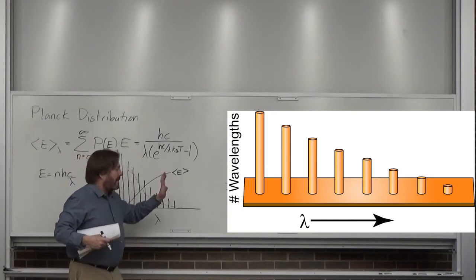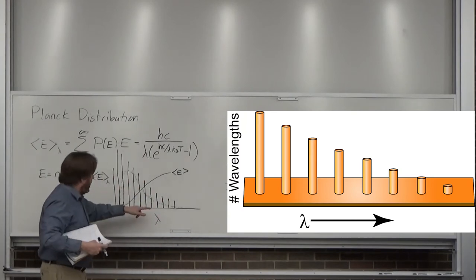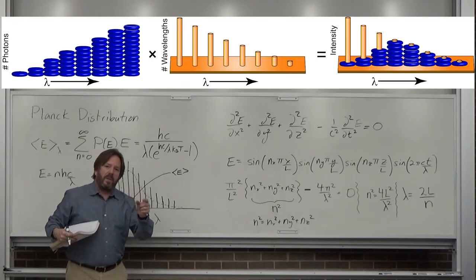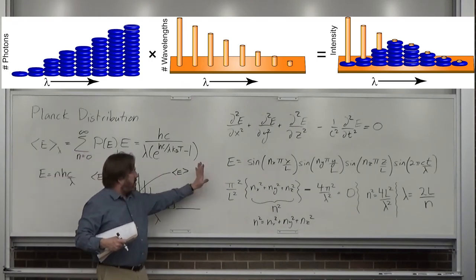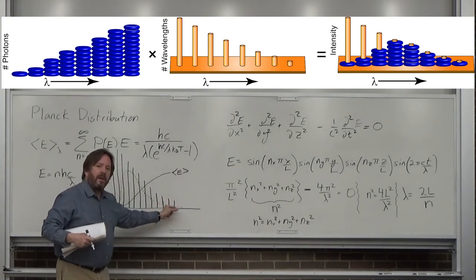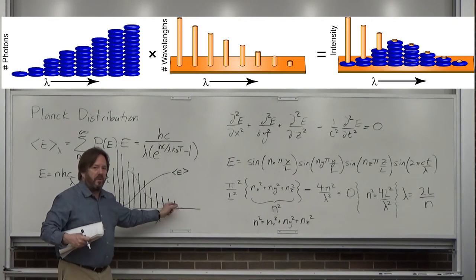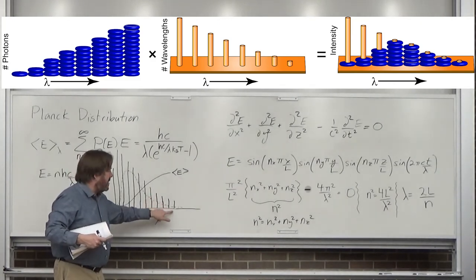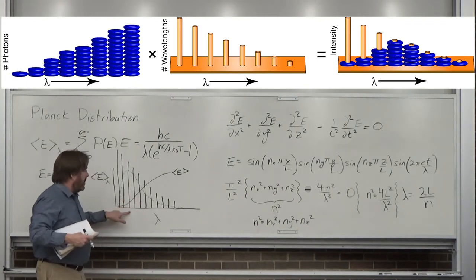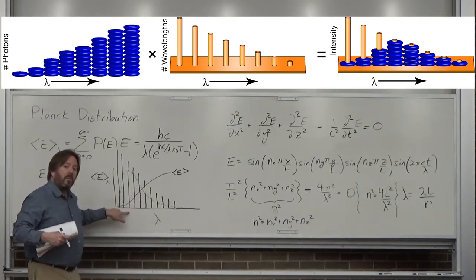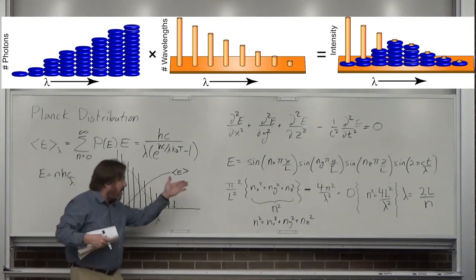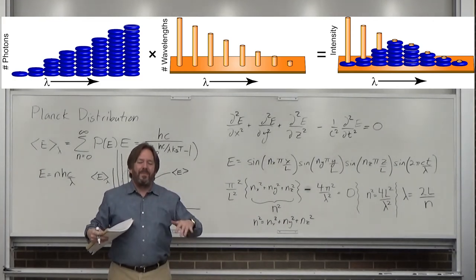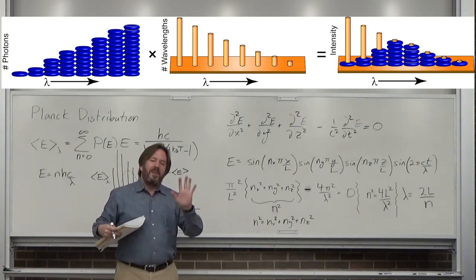As my graphic shows, think of the posts as containers and photons as little cylinders fitting in them. At long wavelengths you have an infinite number of photons but not many modes. At short wavelengths you have lots of room for photons but not many photons. When you multiply those two things together — modes times average energy — you get the Planck distribution, the correct spectrum of the light bulb.